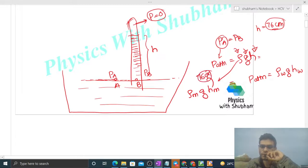So we can equate it like density of mercury should be equal to density of water into g into height of water. That is nothing but atmospheric pressure.